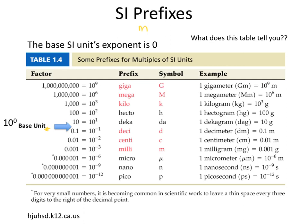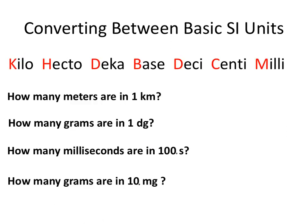Today we're going to focus on the easy decimal movement, specifically the range from the kilo prefix all the way to milli. Looking at this breakdown, we have: kilo, hecto, deca, base, deci, centi, milli. That represents the prefix associated with that range shown on the previous slide.